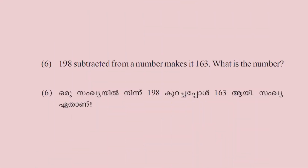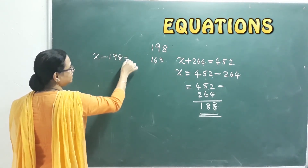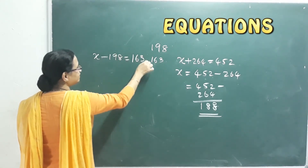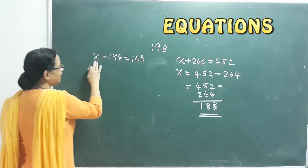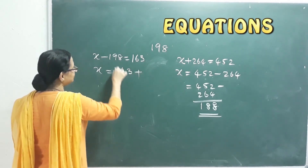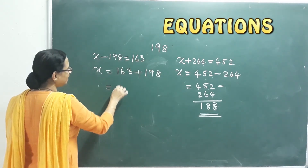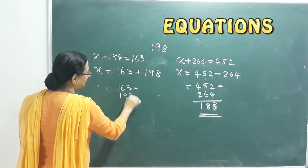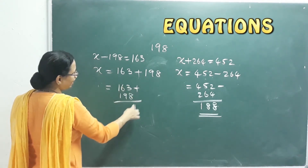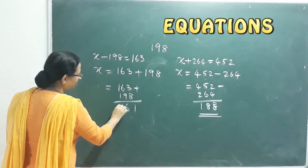198 subtracted from a number makes 163. What is the number? So let's set it up. x minus 198 equals 163. x is equal to 163 plus 198. Adding: 163 plus 198 equals 361.